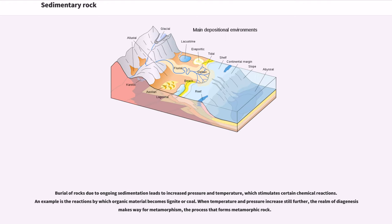Burial of rocks due to ongoing sedimentation leads to increased pressure and temperature, which stimulates certain chemical reactions. An example is the reaction by which organic material becomes lignite or coal. When temperature and pressure increase still further, the realm of diagenesis makes way for metamorphism, the process that forms metamorphic rock.